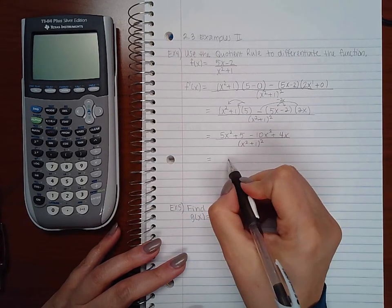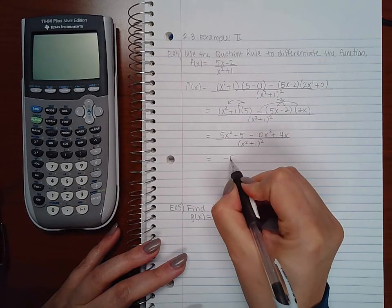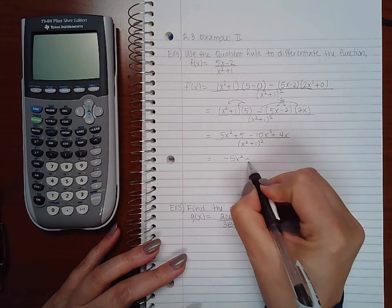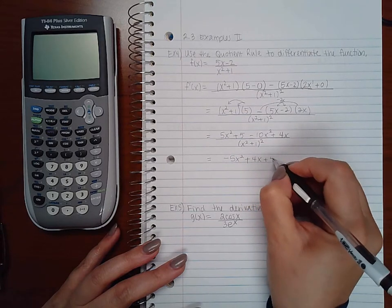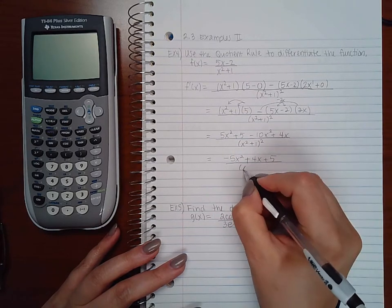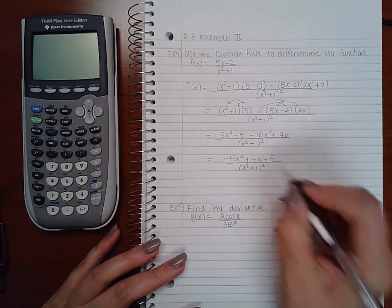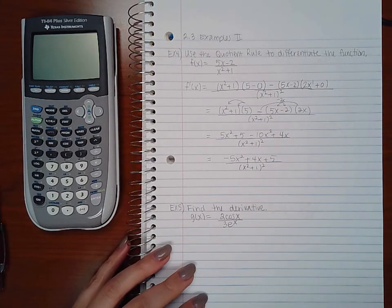So then I get, combining my x squareds, I get negative 5x squared plus 4x plus 5. And that's as far as I can take that function.